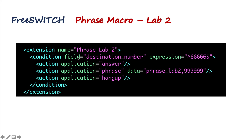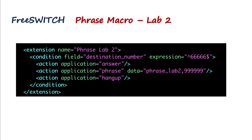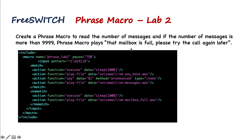In the dial plan, a sample extension number is defined, the channel is answered, and the phrase 'phrase_lab_2' is called with a number greater than 9999 passed as data. This should trigger the no-match section and play the 'mailbox is full, please try again' message. Let's test it using the telephone softphone by dialing the testing number.